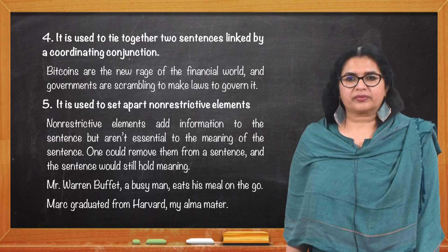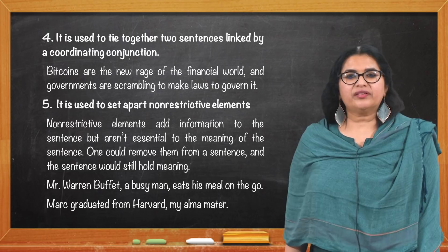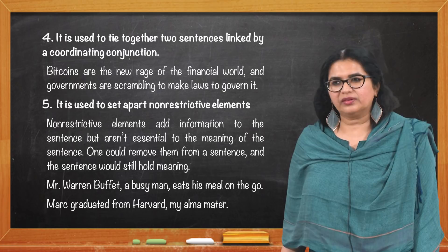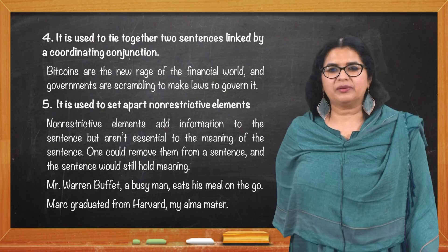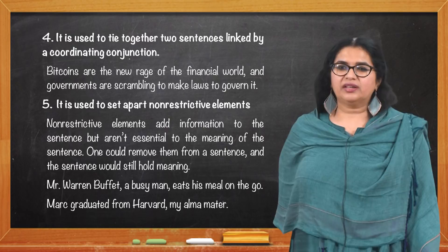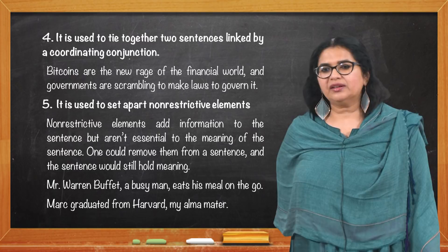A comma is also used to set apart non-restrictive elements — elements that add information to the sentence but aren't essential to its meaning. One could remove them and the sentence would still hold meaning. For example: 'Mr. Warren Buffet, a busy man, eats his meals on the go'; 'Mark graduated from Harvard, my alma mater.' The phrase 'my alma mater' is separated by a comma — it is just an extra bit of information, not essential to the sentence.